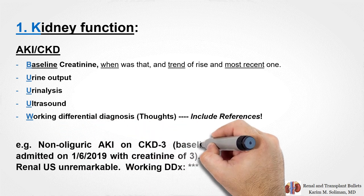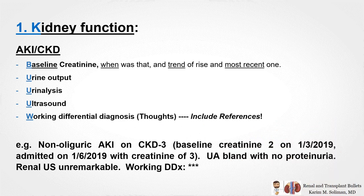So here's an example: Non-oliguric AKI on CKD3. Baseline creatinine 2 on 1-3-2019. Admitted on 1-6-2019 with a creatinine of 3. UA is bland with no proteinuria. Renal ultrasound unremarkable. Working differential diagnosis — then you document your way of thinking.